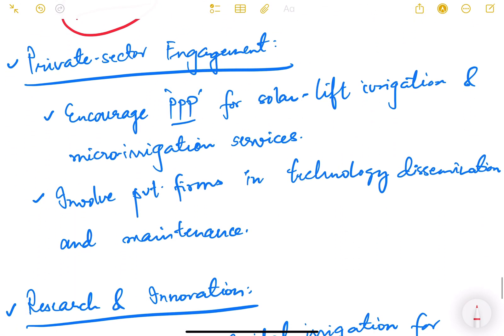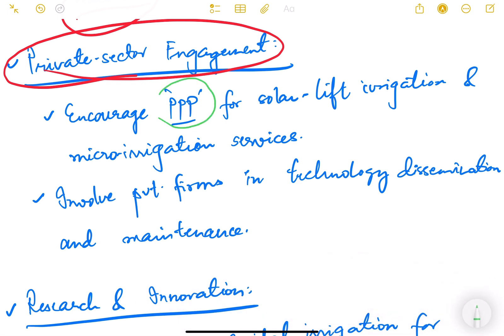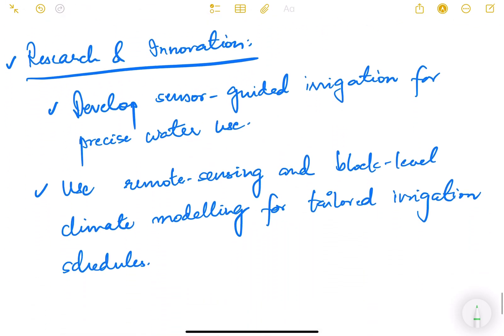Then obviously we need to engage the private sector also. The government alone cannot do all the work. We need to encourage public private partnership PPP for solar lift irrigation and micro irrigation services. Involve private firms in technology dissemination and maintenance. Private firms can bring in their technology, help in dissemination, help in operation and maintenance and give their services so that the government can do that project in partnership with these organizations.